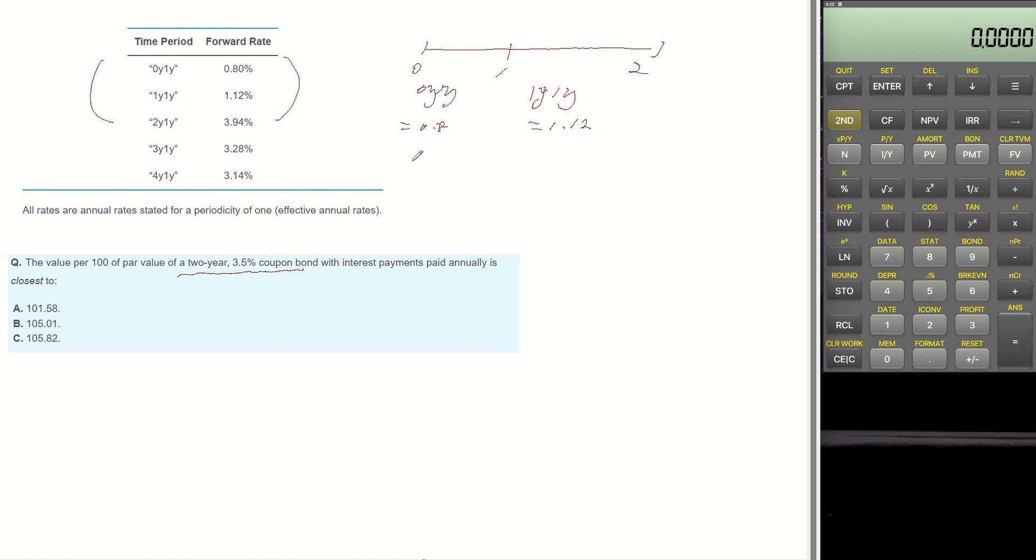By using the geometric average, 1 plus 0-year into 1-year forward rate multiplied by 1 plus 1-year into 1-year forward rate is equal to 1 plus year 2 spot rate squared. So if we plug the numbers, 1 plus 0.008 multiplied by 1 plus 0.012 is equal to 1 plus year 2 spot rate squared.